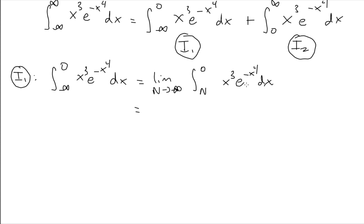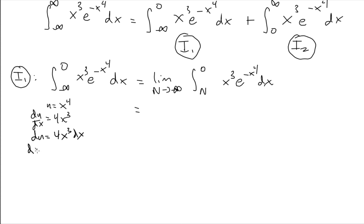I don't know the antiderivative off the top of my head, so I'll use substitution. If I let u equal x to the power of 4, the derivative of that involves x to the power of 3, and I have x to the power of 3 right out in front, so that's a good idea. So I'll let u equal x to the power of 4. Then du/dx equals 4x cubed, and treating this as a fraction, du equals 4x cubed dx, which means dx equals 1 over 4x cubed du.